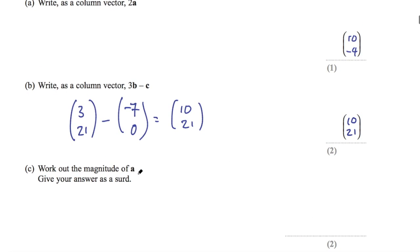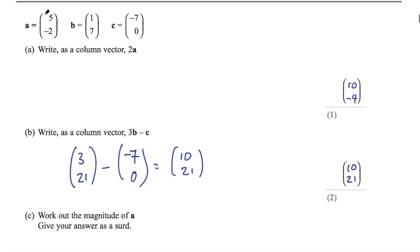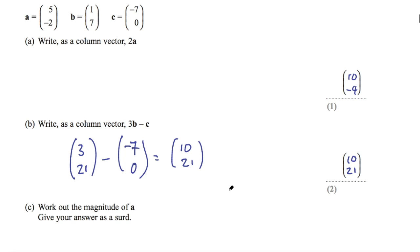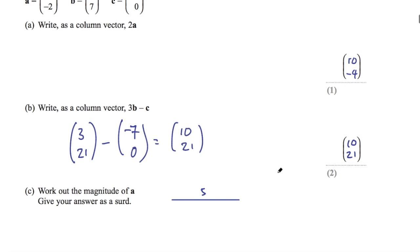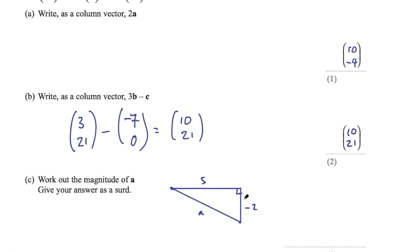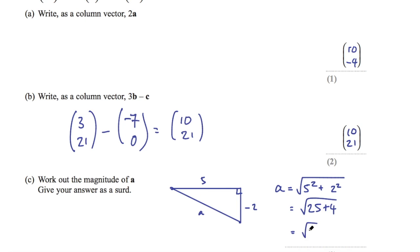Part C says work out the magnitude of A. To work out the magnitude of a vector given as a column vector, we can draw it as a diagram. The top number is a horizontal movement of 5 and the bottom number is the vertical movement of −2, so it goes down. This forms a right angle triangle and we need to find the hypotenuse using Pythagoras' theorem. So the magnitude of A will be the square root of 5 squared plus 2 squared. We can ignore the negative because we're squaring it. So this is the square root of 25 plus 4, which is the square root of 29.